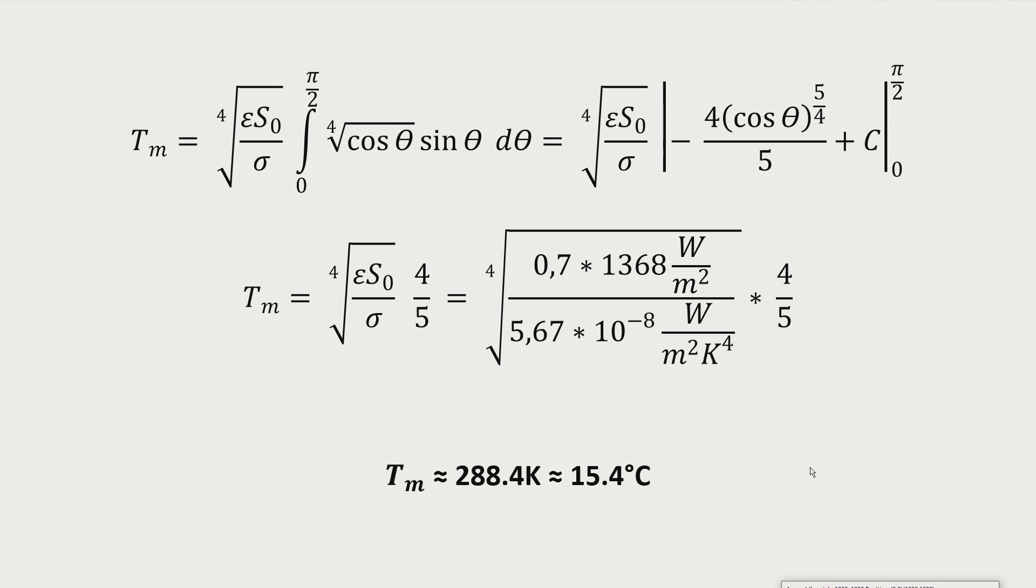With an area averaged average temperature of Tm equals 15.4 degrees centigrade, the integral solution gives a result that is surprisingly close to the average temperature of 15.5 degrees centigrade specified by the IPCC and determined by weather station measurements as the global mean temperature of the Earth.